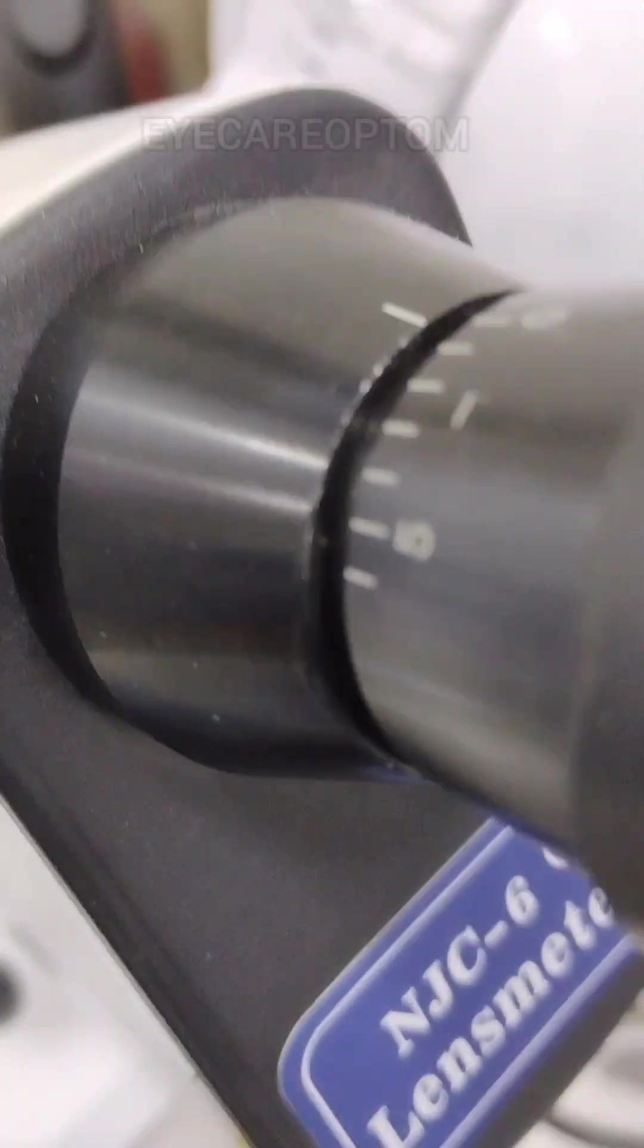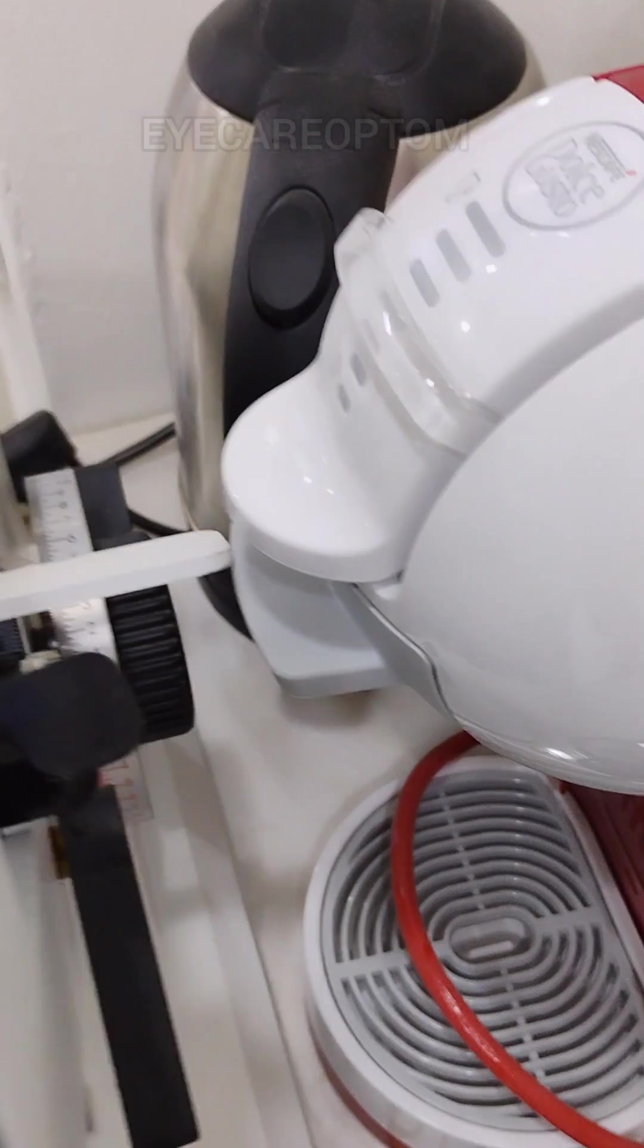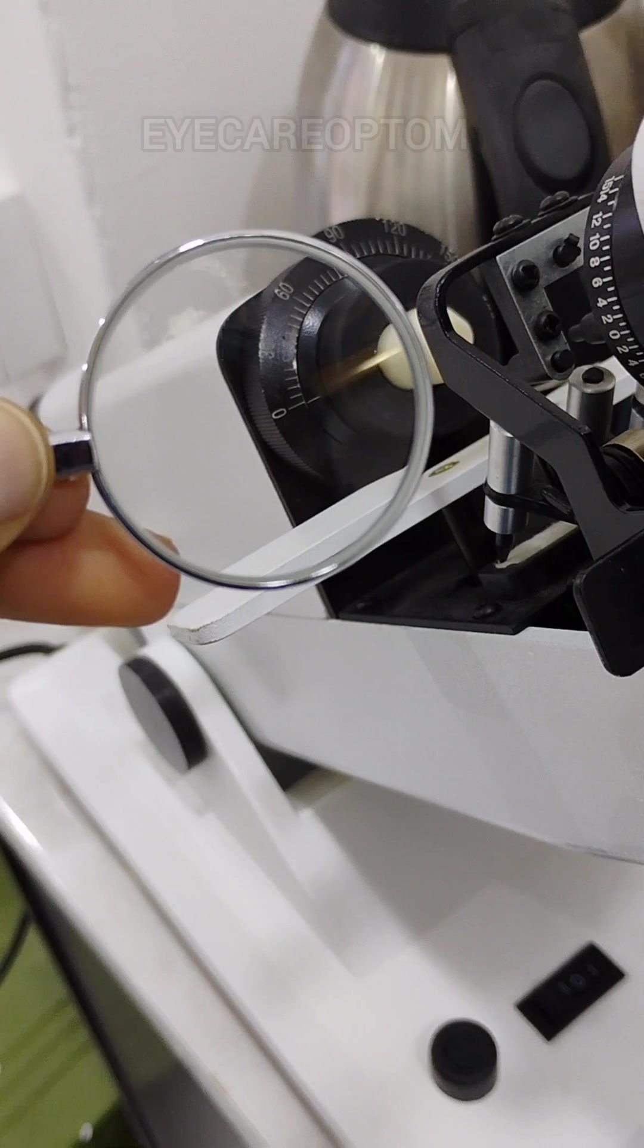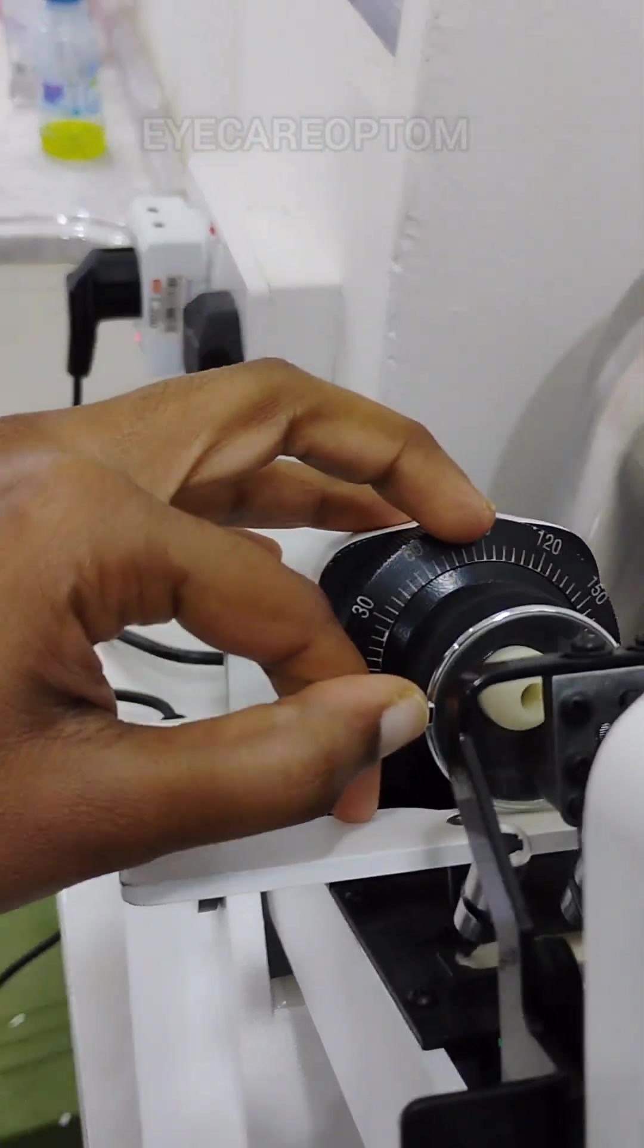Before checking your lens power, set your eyepiece at 0, align your axis at 180 and 0, and power drum at 0. Make sure your mires are clear, then take your lens, place it in the center, and check your mires.